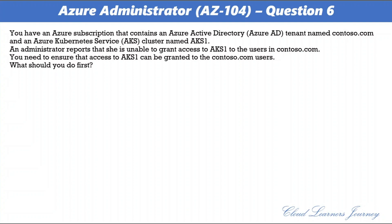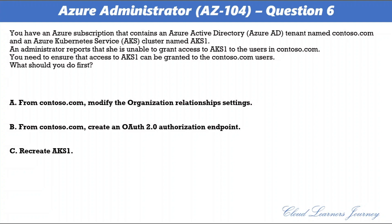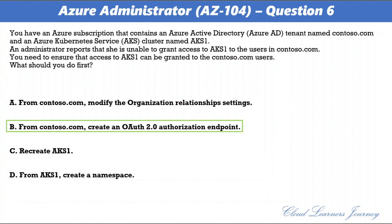Question 6. You have an Azure subscription containing an Azure Active Directory tenant named Contoso.com and an Azure Kubernetes Service cluster named AKS1. An administrator is unable to grant access to AKS1 to users in Contoso.com. What should you do first? Options: A. Modify the organization relationship settings. B. Create an OAuth 2.0 authorization endpoint from Contoso.com. C. Recreate AKS1. D. Create a namespace from AKS1. The correct option is B. Azure AD authentication is provided to AKS clusters with OpenID Connect, which is an identity layer built on top of the OAuth 2.0 protocol.